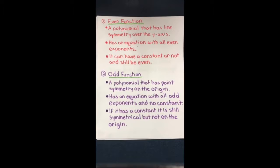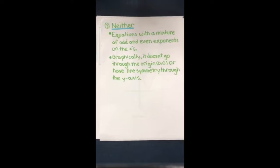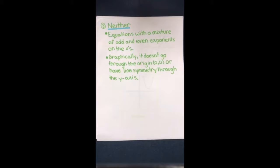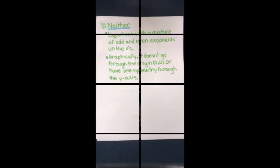And if it has a constant, it is still symmetrical but not on the origin. And finally, we have a function that is neither odd or even. This has equations with a mixture of odd and even exponents on the x's. Graphically, it doesn't go through the origin, which is (0, 0), or have line symmetry through the y-axis.